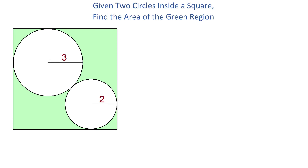In this figure, we are given two circles inside a square. The radius of one of them is 3 units, and the radius of the other one is 2 units. We need to find the area of the shaded region — the region that is inside the square but does not include the circles.